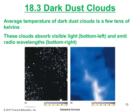Dark dust clouds. Their average temperature is just a few tens of Kelvins — remember, absolute zero is zero degrees Kelvin — so dark dust clouds are very cold places. They absorb visible light and emit radio wavelengths. At optical wavelengths, this dark dust cloud known as L977 can be seen only by its obscuration of background stars. When we switch to radio wavelengths, we see that it emits strongly in the carbon monoxide molecular line, with the most intense radiation coming from the densest part of the cloud.